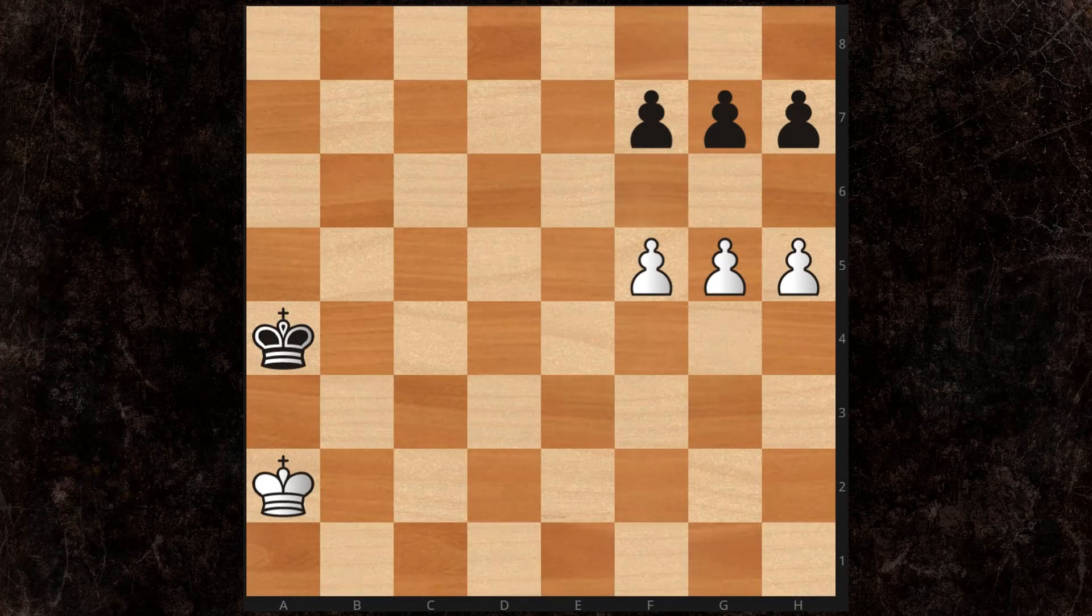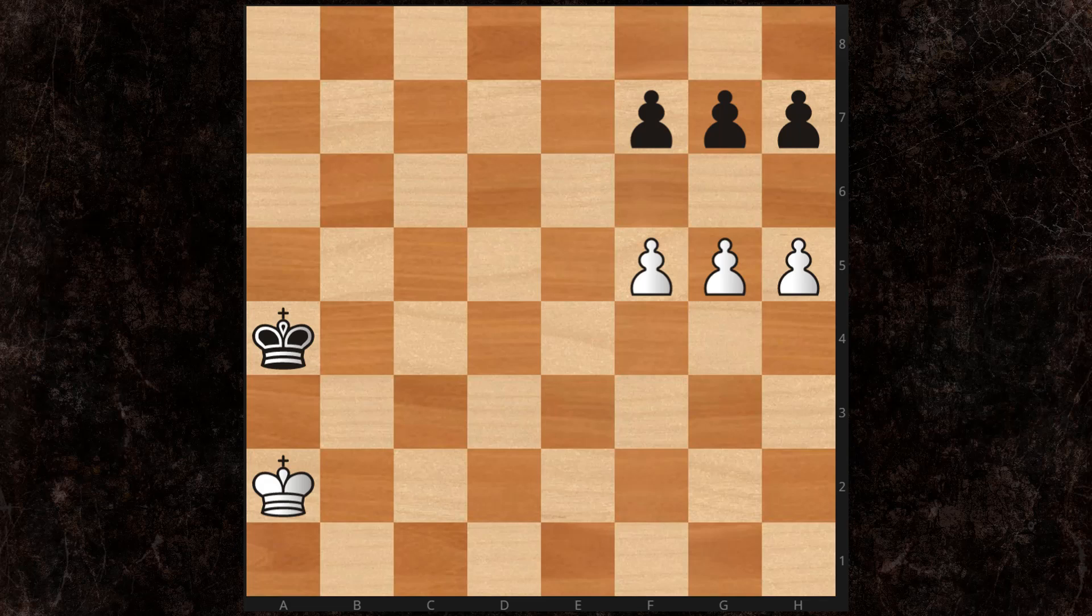Hello, everybody. Welcome to the Complete Chess Endgame course. We are on position 17 of the King and Pawn Endings. And we have two more positions after this, so 19 total, and then we're going to move on to Rook Endings.